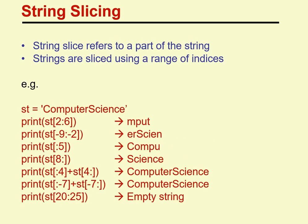Next is string slicing. Slicing refers to a part of the string. For example, if the string is 'hello world', a part of it could be 'hello' or 'world'. Strings are sliced using a range of indices, and for every string the index starts with 0.